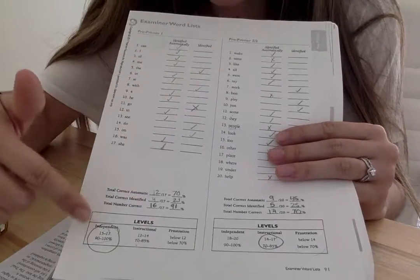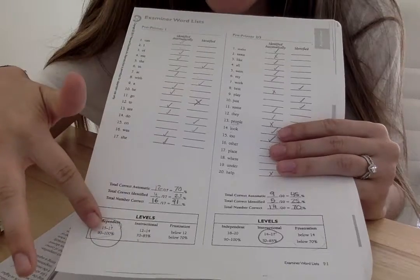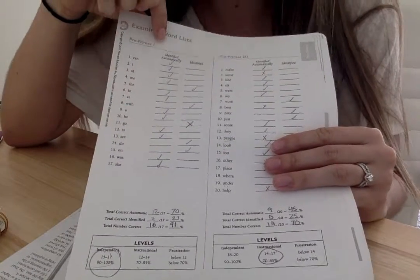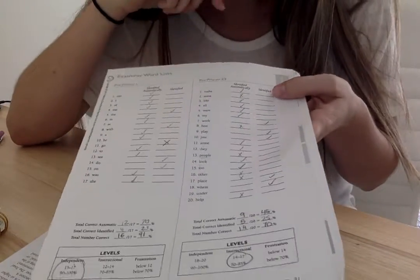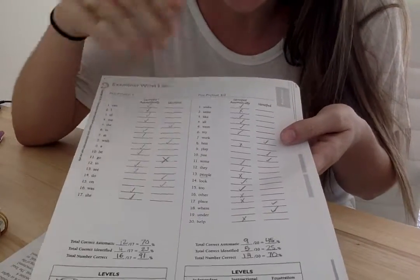So that's why we do those two different things. But what really matters is the total number he got correct, which was 16 out of 17, leading him to a 91%. This shows me that he's able to do all of these types of words independently. So because he did this independently, and this was the pre-primer one set, I went ahead and moved him to the pre-primer two, two and three set. And here he had a little bit more difficulty, but just a little bit, not too much.